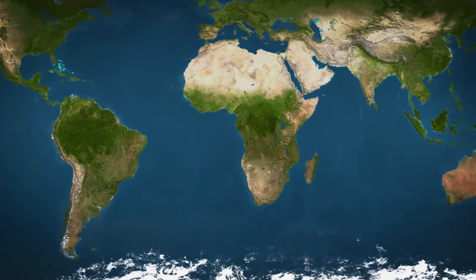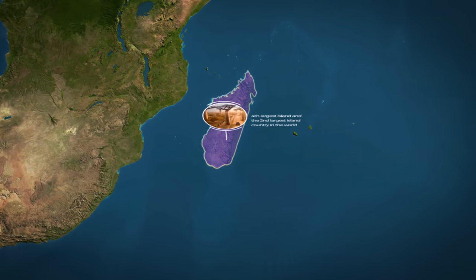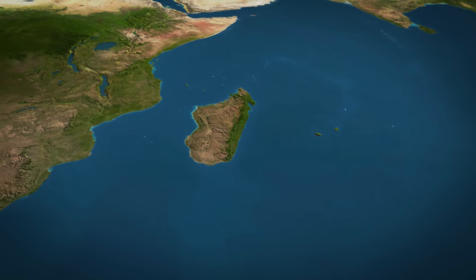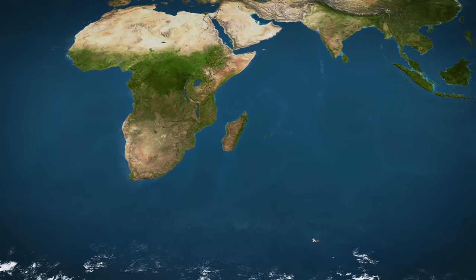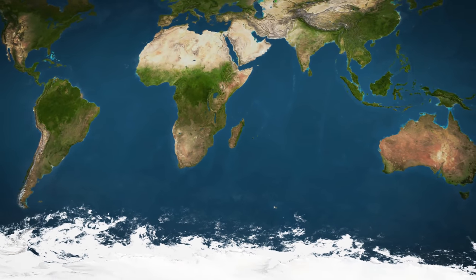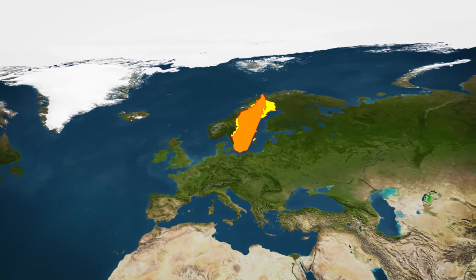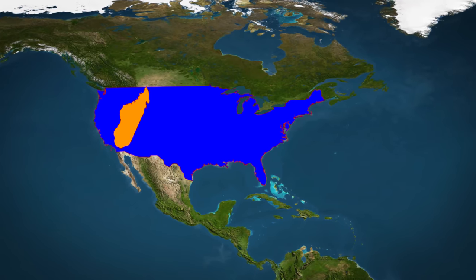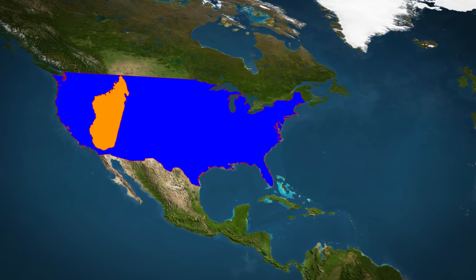Heading to the east coast of southern Africa, we find Madagascar. It is the fourth largest island and the second largest island country in the world after Australia. However, it looks pretty average on the Mercator projection — certainly not small, but not big either. At number 46 in size, the country is larger than a quarter of the world's countries. It is actually slightly bigger than Sweden. When placed over the United States, Madagascar spans from the southern border of California all the way up to Montana and close to the US border with Canada.